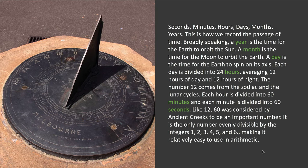Let's first take stock of the different measures that we use in our everyday lives: seconds, minutes, hours, days, months, years. A year is the time it takes the earth to go around the sun once. A month is essentially the time for the moon to orbit the earth once. A day is the time for the earth to spin on its axis once.